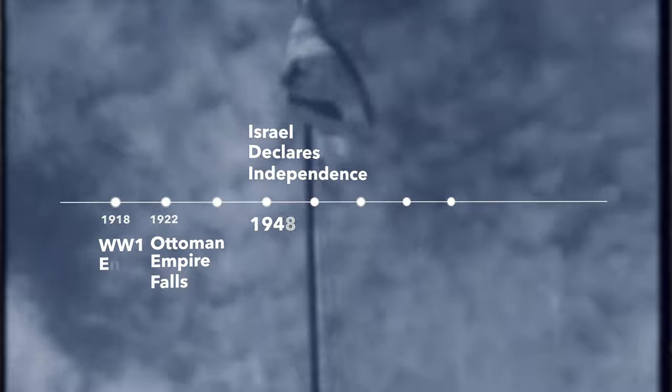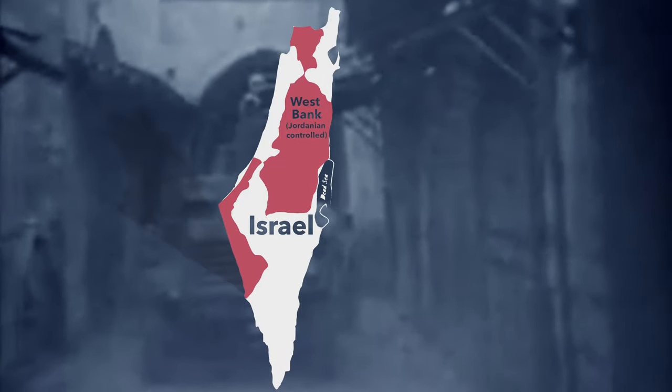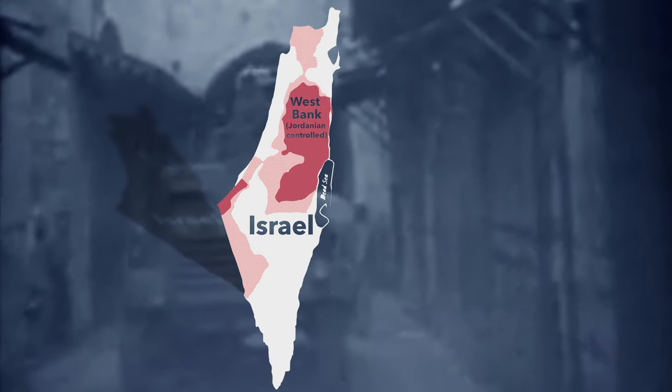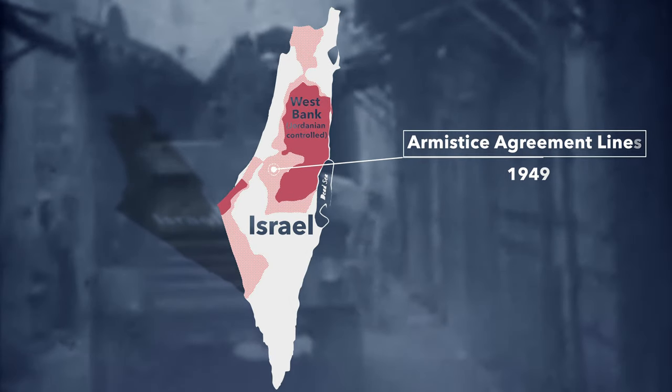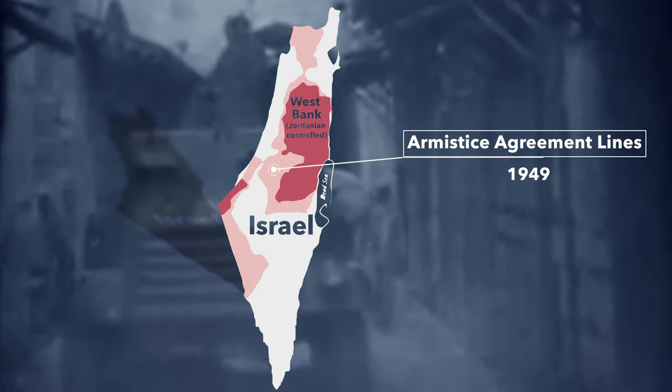1948 arrives. Israel declares its independence and is immediately attacked by all of its Arab neighbors after the Palestinian delegation rejected a peace plan in 1947 for the creation of a Palestinian and an Israeli state. Israel pushed all the attacking armies out. The dotted lines on your maps are armistice agreement lines from 1949.